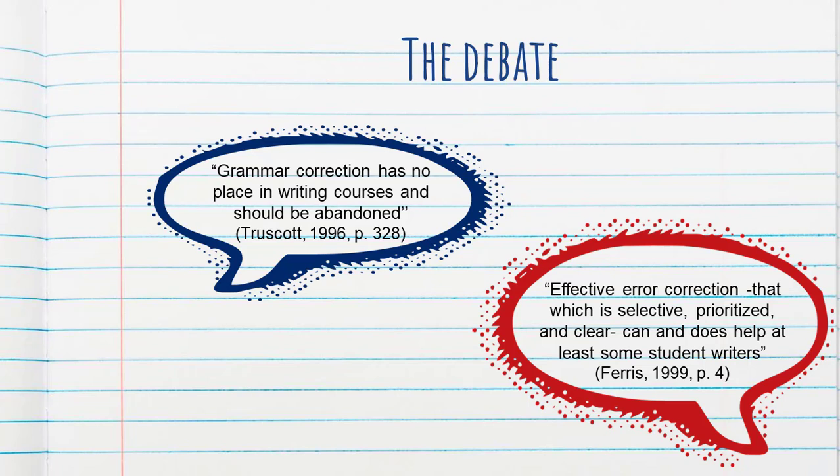So one side states that we should not correct errors because that doesn't have much of an effect on development and also it could be harmful because it inhibits students from taking risks. The other side says that correcting errors could actually be useful for the learners. True, not for everybody, but at least for some learners.